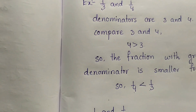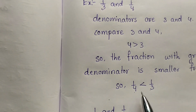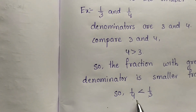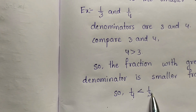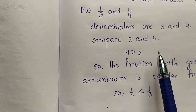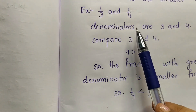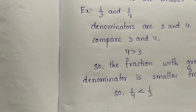We got the same result both ways. Simply compare the denominators here. The greater the denominator, the smaller that fraction. When the numerators are the same, compare just the denominators — the greater the denominator, the smaller the fraction.